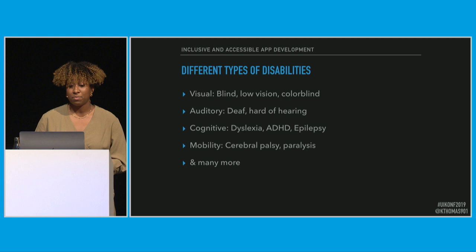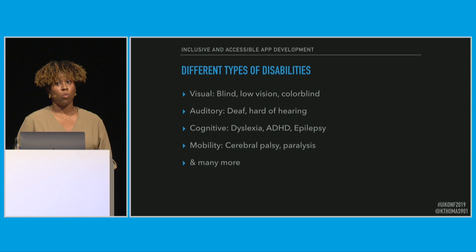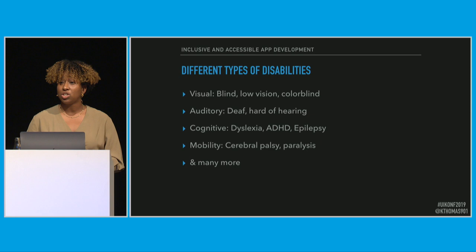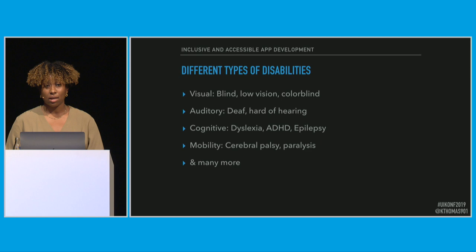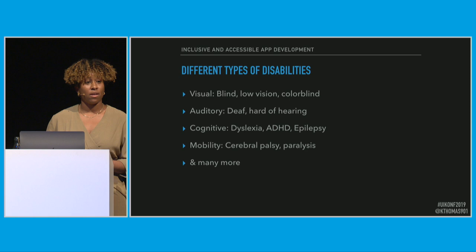There are so many different types of abilities. You have visual disabilities, whether someone's blind, they suffer from low vision, or color blindness. You have auditory disabilities, whether someone is deaf or hard of hearing. You have cognitive disabilities like dyslexia, ADHD, epilepsy. And then you have mobility or motor disabilities like cerebral palsy and paralysis. There are many more, so when you're thinking about building technology, you have to think about all these different types of life experiences.